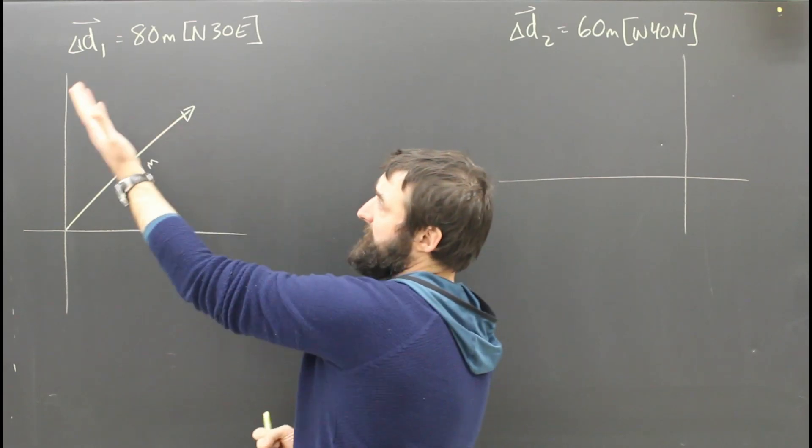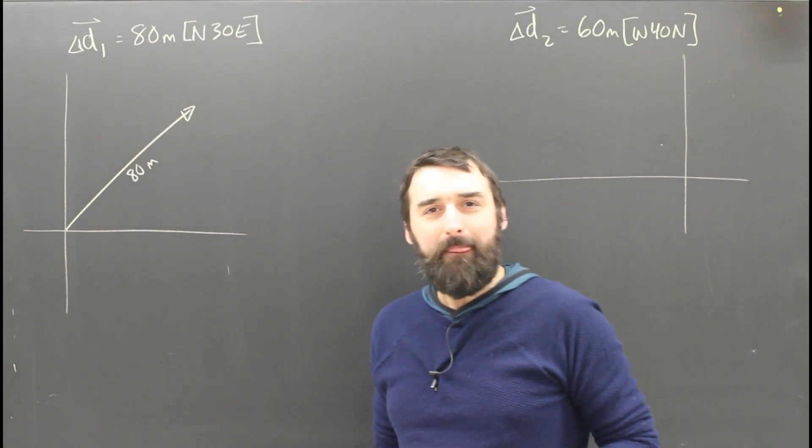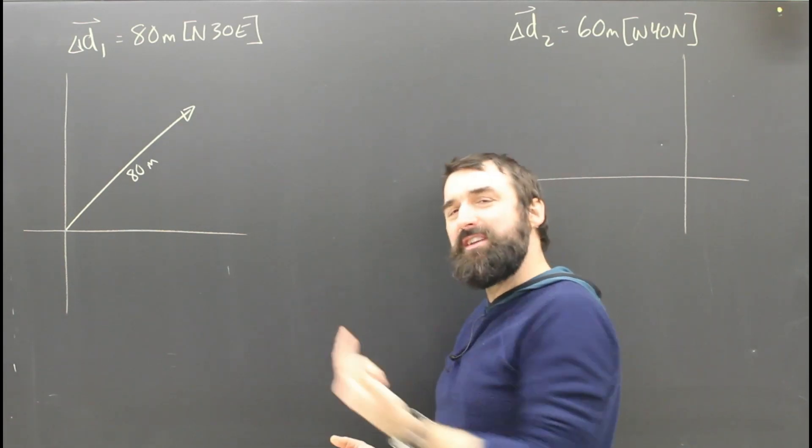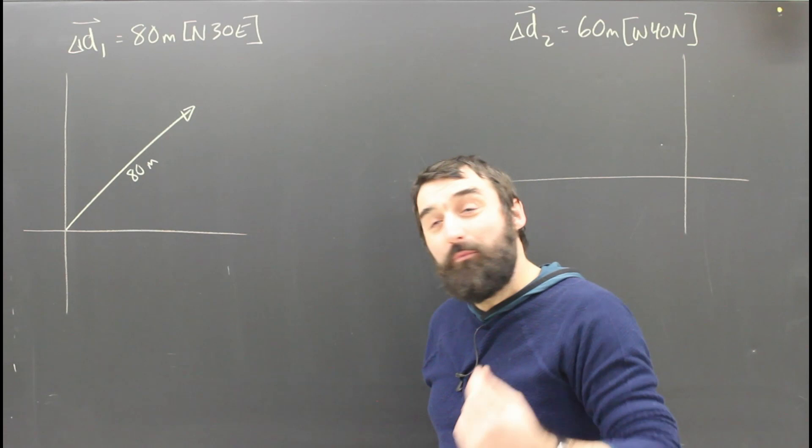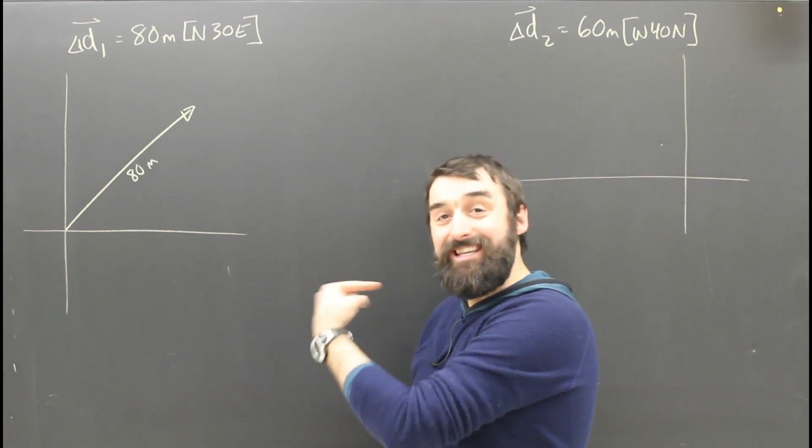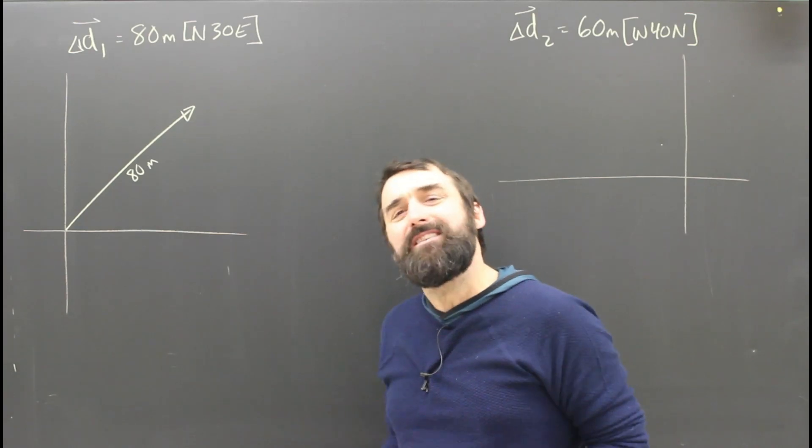So here I have a displacement. Some dude walked 80 meters north 30 east, and my question is, how far east did he go? How far north did he go? What I'm really asking you is what is the east and north components of his displacement. So I'm asking you for components.